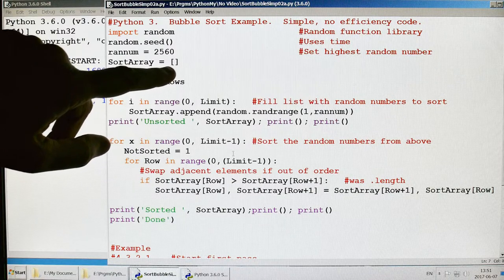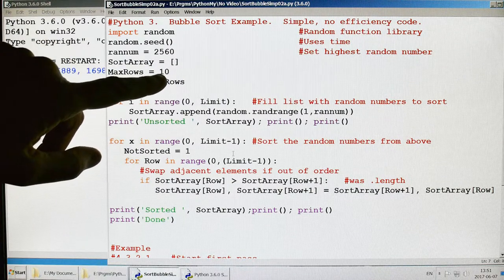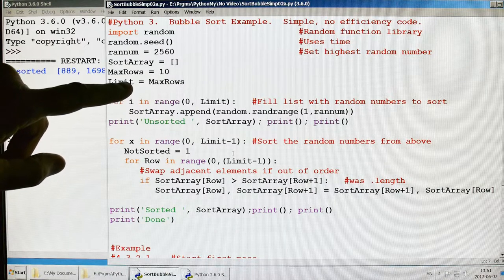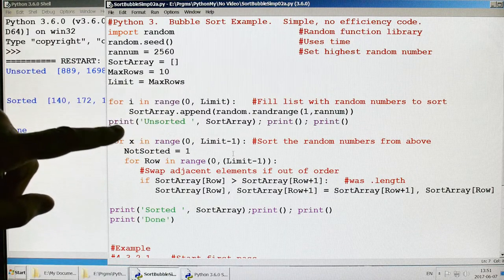This is part of the sort array, so this is where I'm going to sort things. The maximum rows are 10, so this is not very big. It's just a quick example. And then the limit, maximum rows.